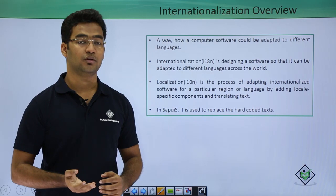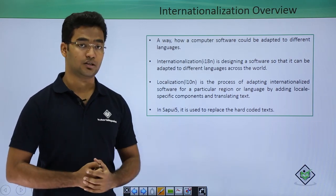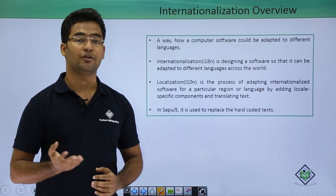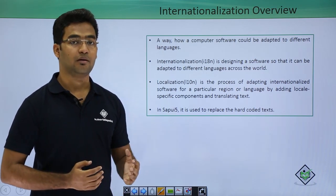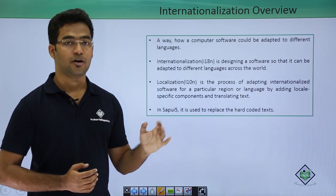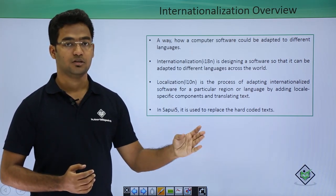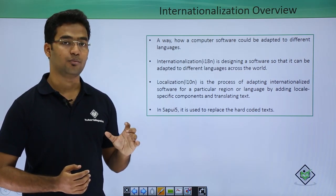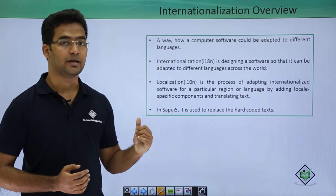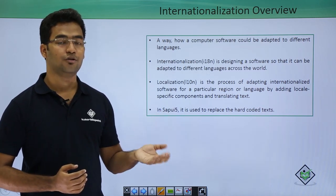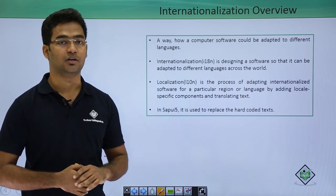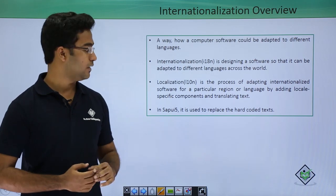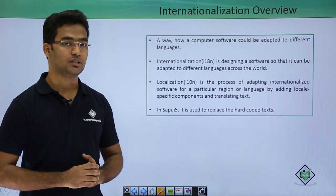In SAPUI5, we use internationalization to replace hardcoded text. For example, if we are using a table and providing field names such as employee data or age, all these field names are in English. We have to remove or replace this hardcoded text with i18n so that we could use it in another language — like German, where the data may sound or be pronounced differently.